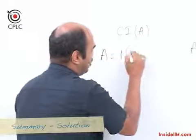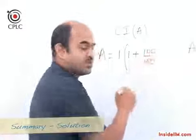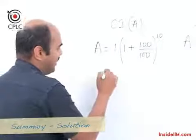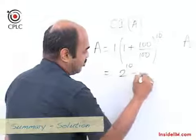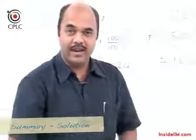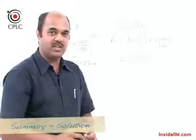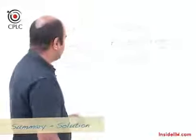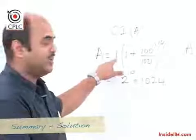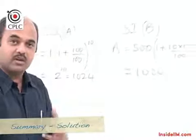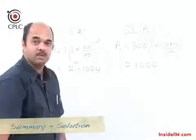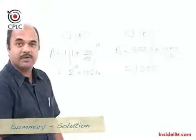For piggy bank A, this is a compounding phenomenon: doubling every year means a 100% increase each period applied to the new amount each time. Using the CI formula: Amount = 1 × (1 + 100/100)^10 = 2^10 = 1024 rupees. Person A ends up with 1024 rupees versus person B's 1000 rupees. This proves that compounding is a very powerful concept — even starting with just 1 rupee versus 500 rupees, person A ends up with more money.